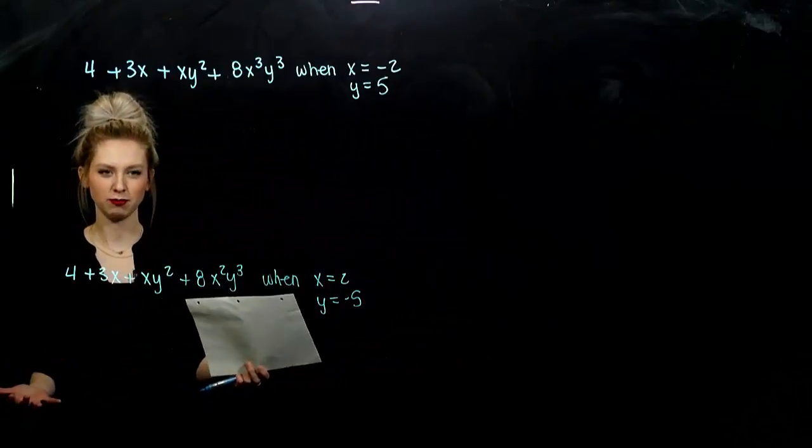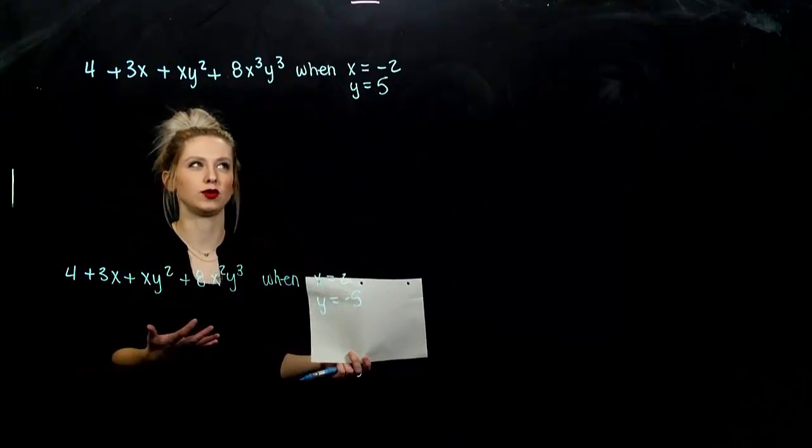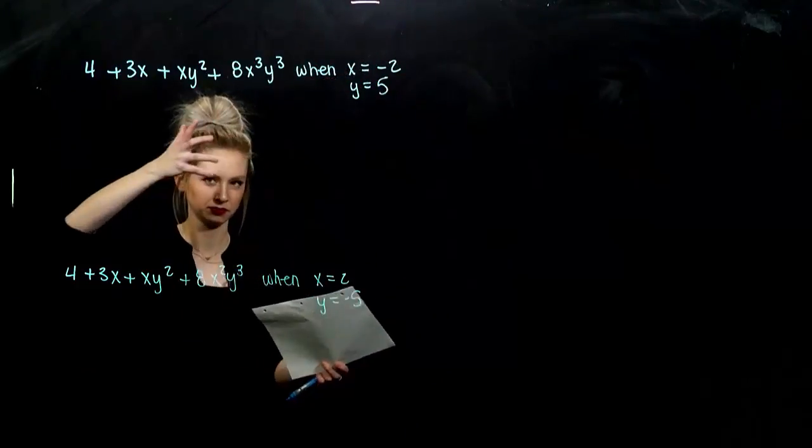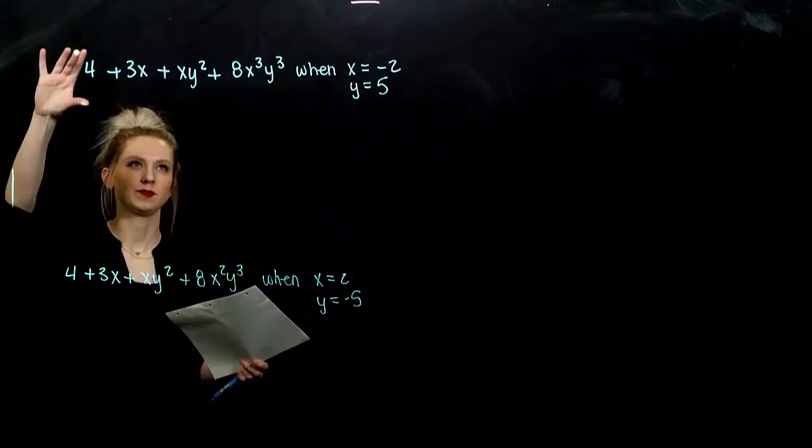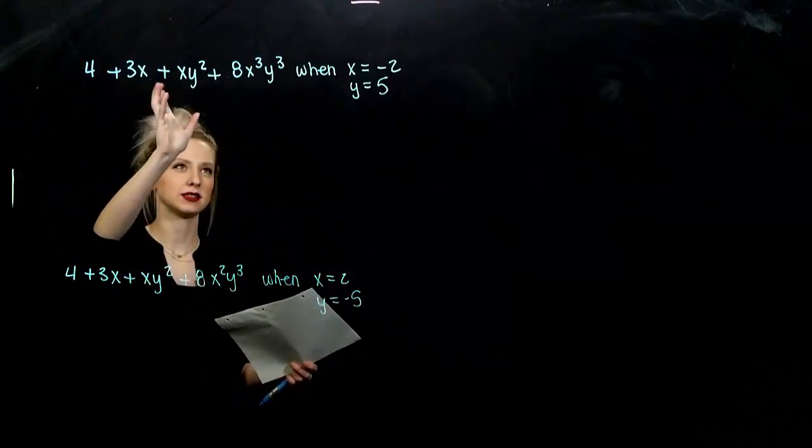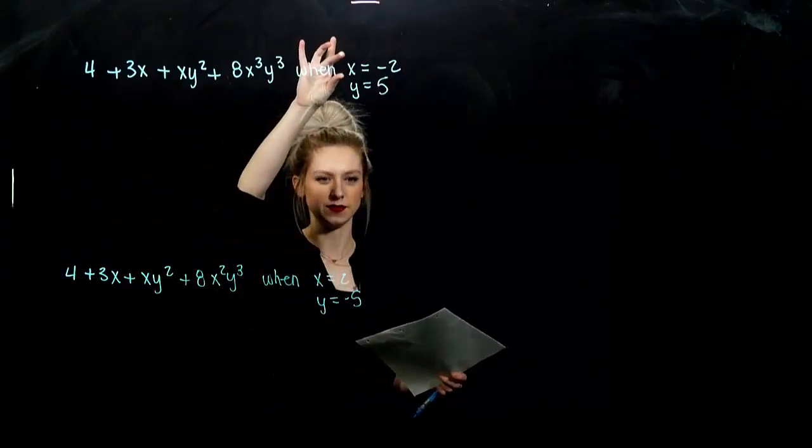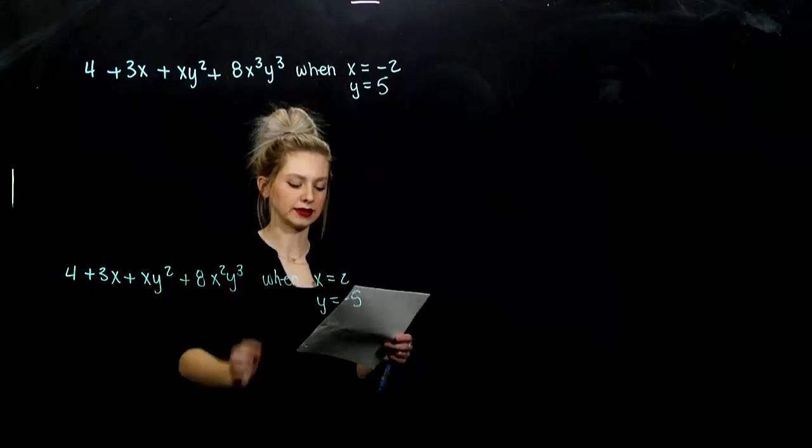Very similar to what we have been doing, but now we just have to be careful to assign the correct constant to the correct variable. So we're going to take a look at this case. Given this polynomial with x's and y's combined, I want to evaluate it when x is negative 2 and y is positive 5.